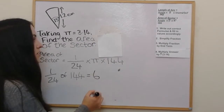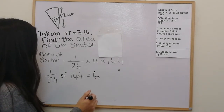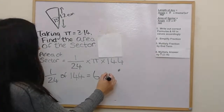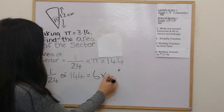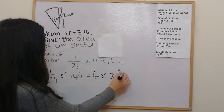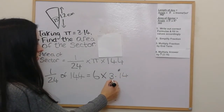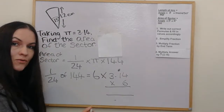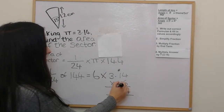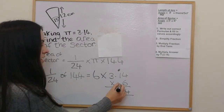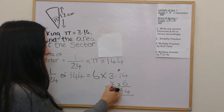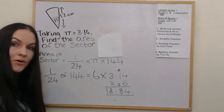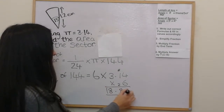So we've got 6, and then we multiply it by 3.14. Doing 6 times 3.14 as a written sum: 6 times 4 is 24, carry the 2; 6 times 1 is 6 plus 2 is 8; 6 times 3 is 18. So the area of the sector is 18.84 centimetres squared.